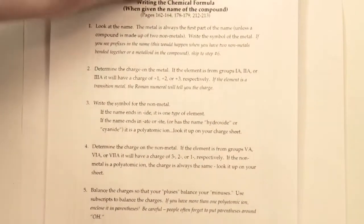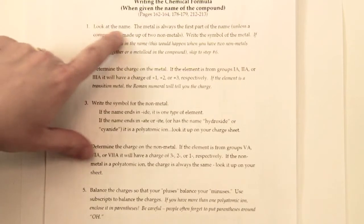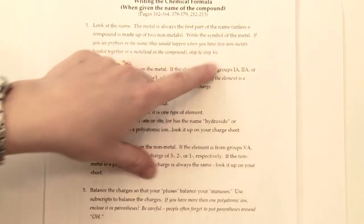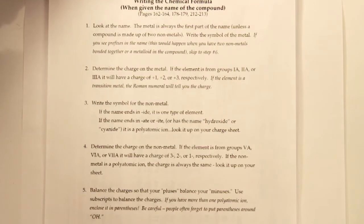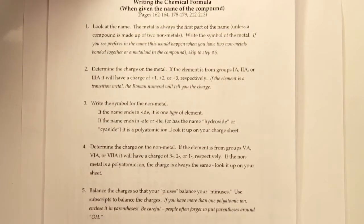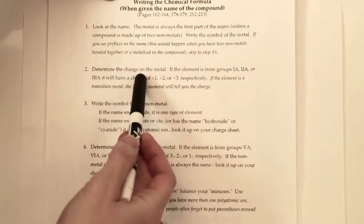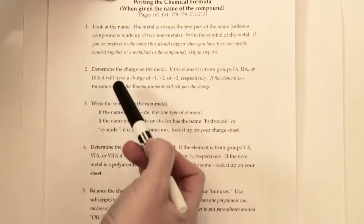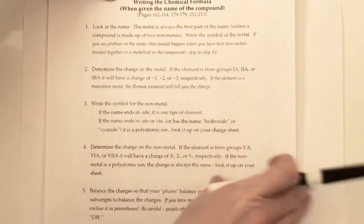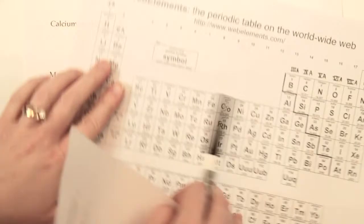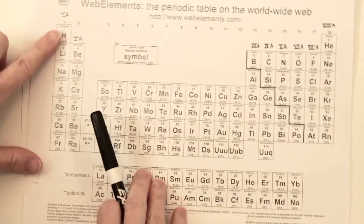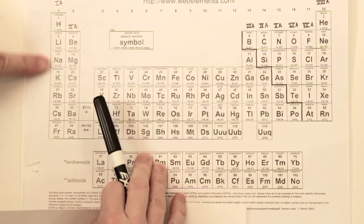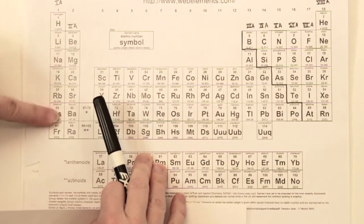When naming an ionic compound, you look at the name given. The metal is always first — just write the symbol of whatever metal they tell you. So if you see aluminum, write Al; if you see magnesium, write Mg. Then figure out the charge of that metal. Elements from groups 1A, 2A, or 3A have charges of +1, +2, or +3 respectively — based on which column they're in on the periodic table.